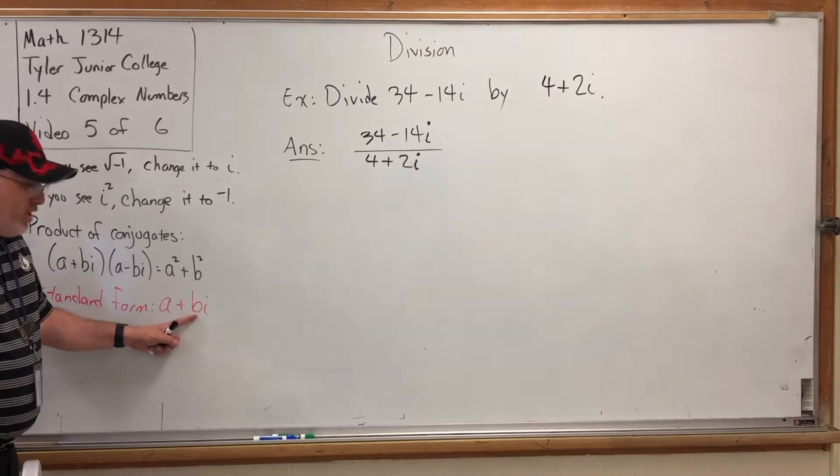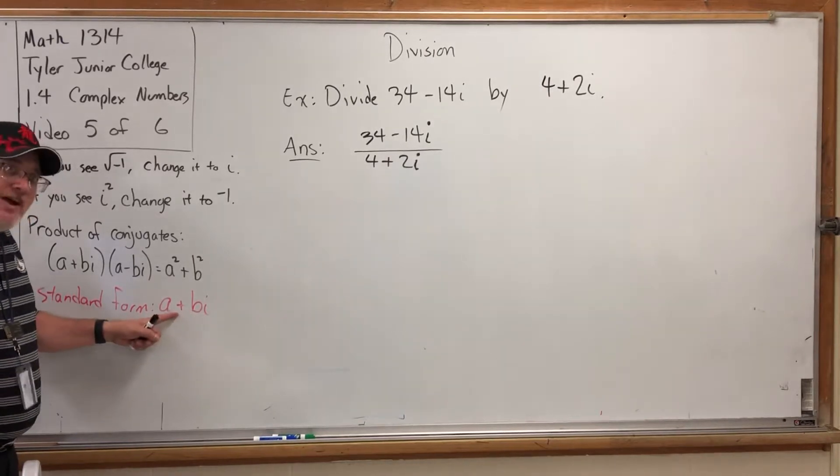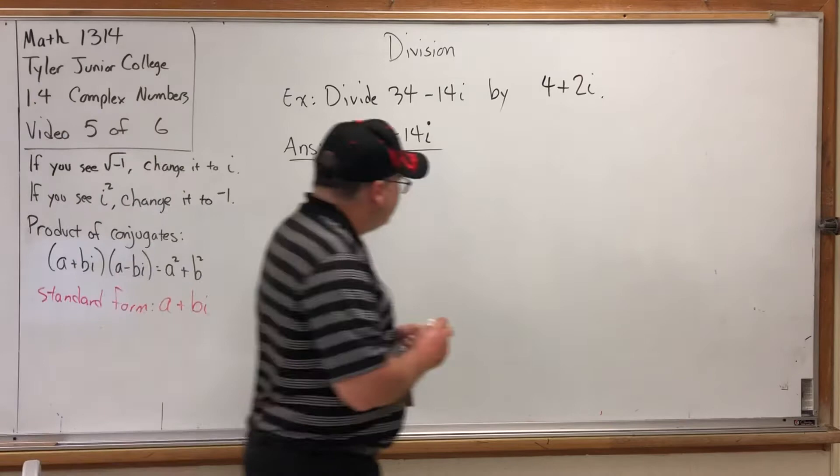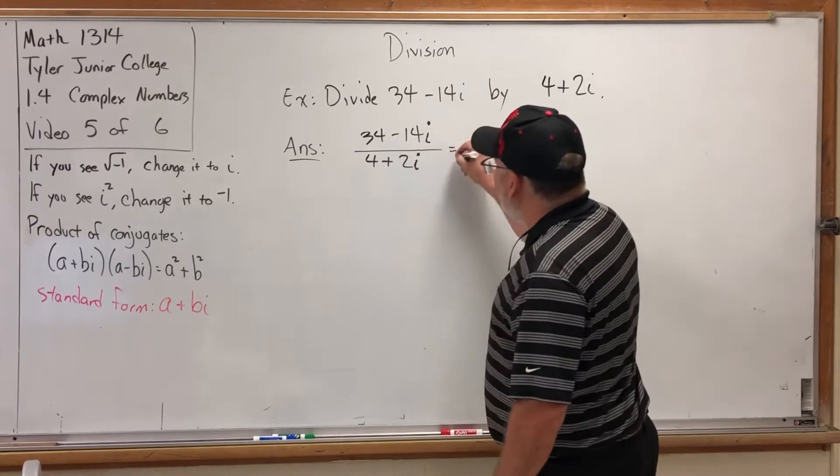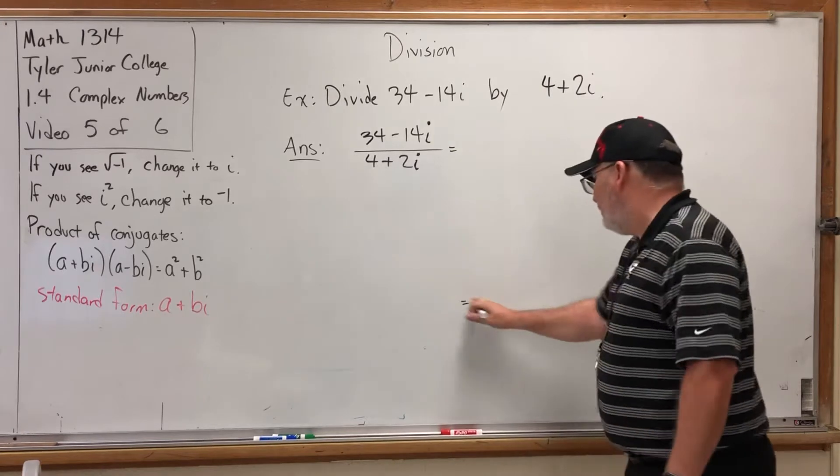So how are we going to get there? How are we going to get from one complex number on top of another to something of the form a + bi?